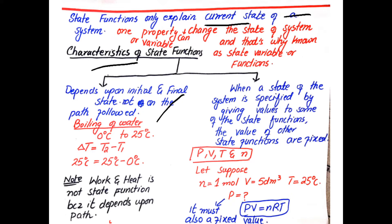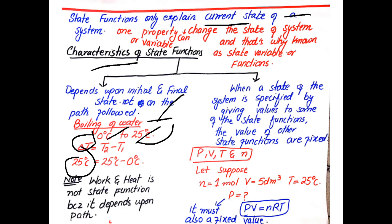For example, if water is initially at 0°C in liquid form and you increase the temperature to 25°C, the change in temperature is 25°C, which equals T₂ minus T₁. Whether you heat it slowly or quickly, the change in temperature depends only on the initial and final state, not the path taken.